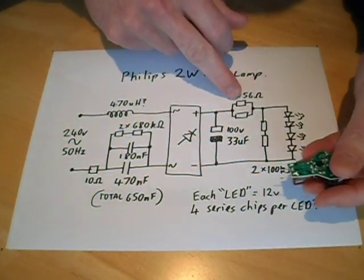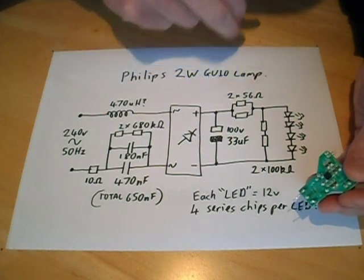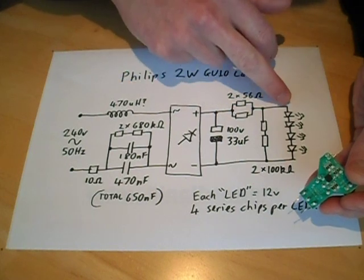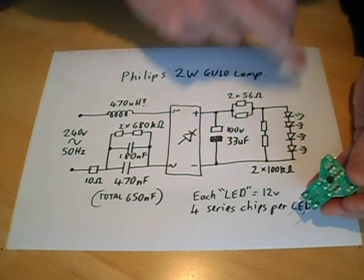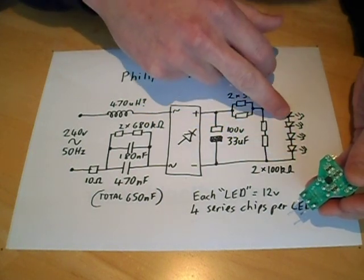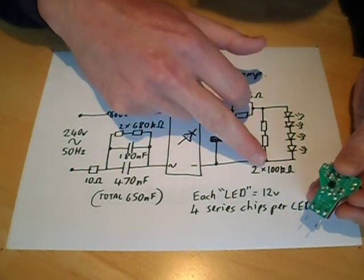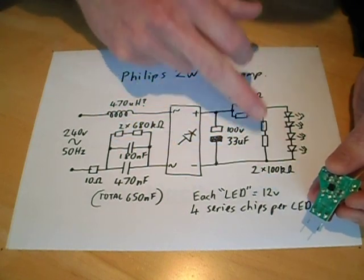But anyway, after that, two more surface mount resistors in the back, in series, two 56 ohm resistors, giving about 28 ohm equivalent, feeding the LEDs. And I've shown four LEDs here, but effectively, because each one is four LEDs in itself, there's 16 LEDs.